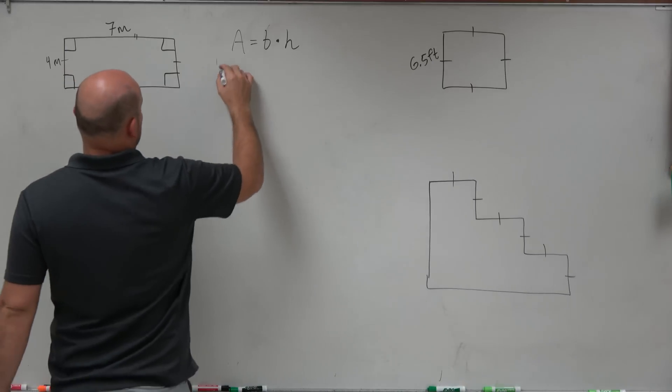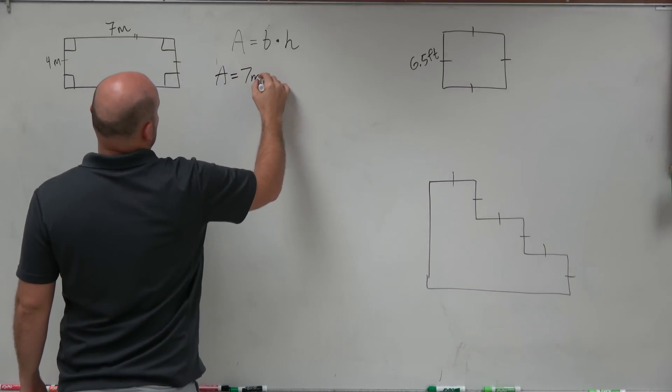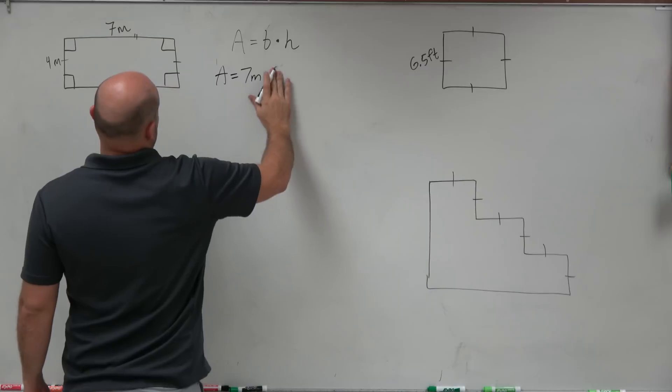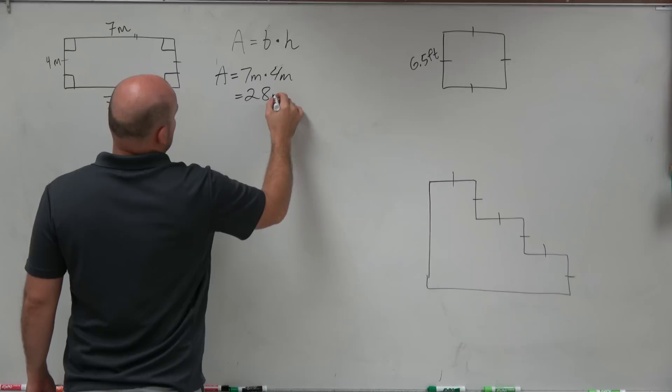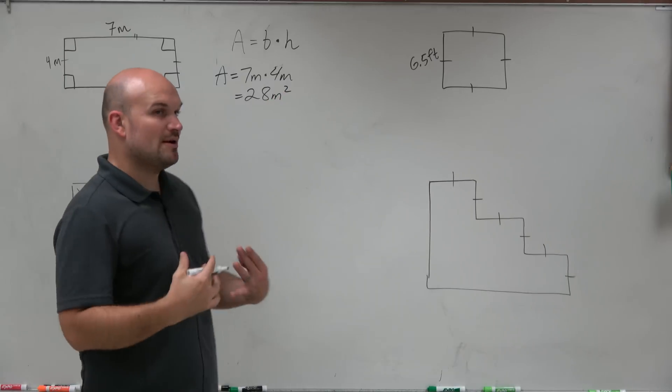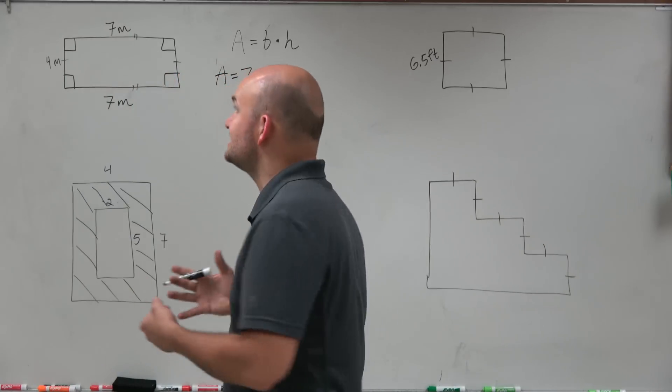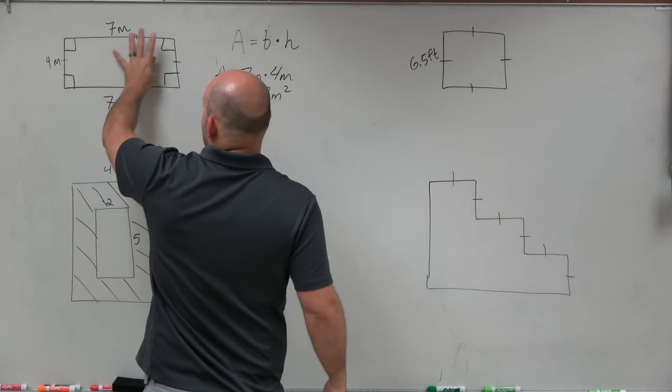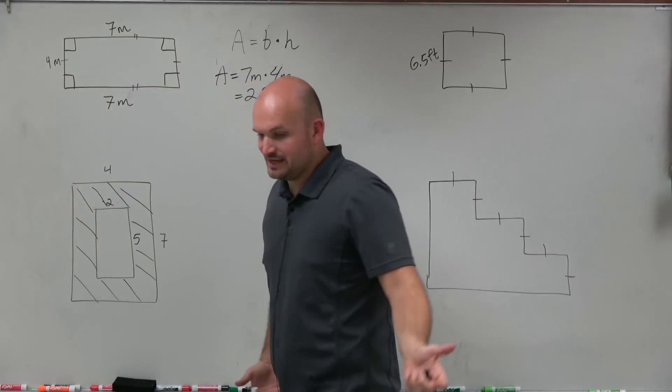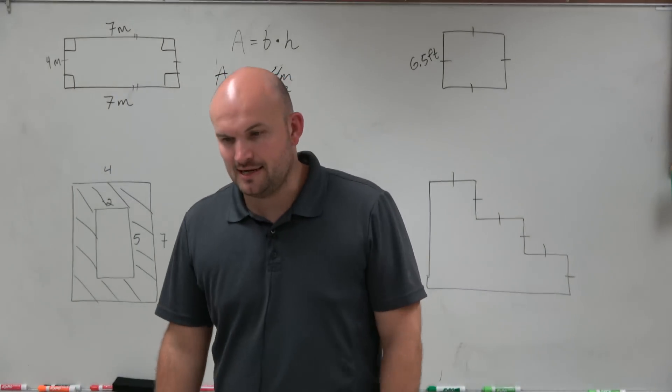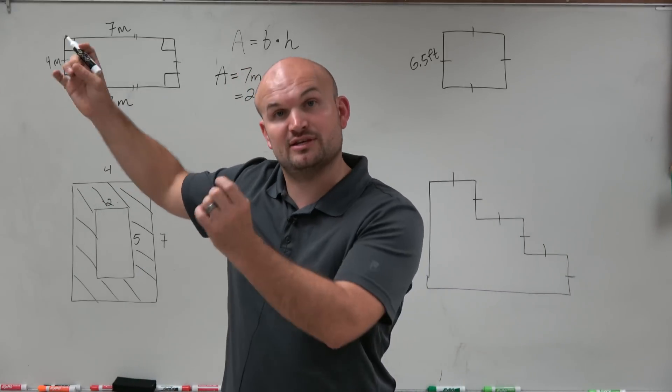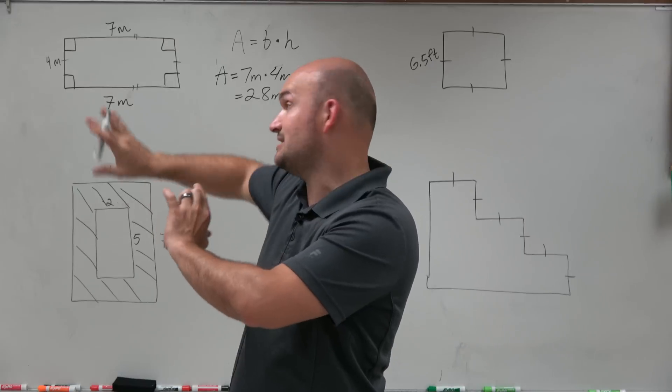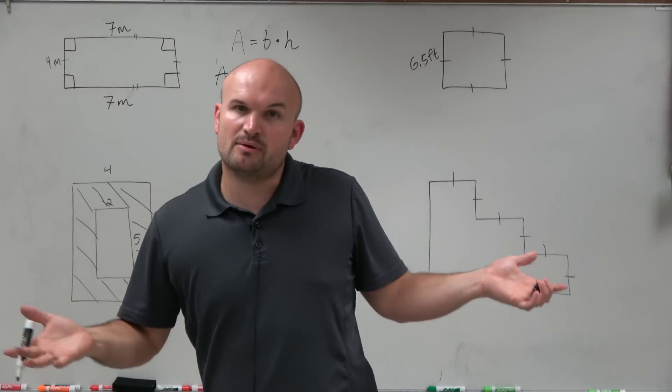To find my area, all I'm simply going to do is 7 meters times 4 meters, and that's going to equal 28 meters squared. Remember, area represents basically the space inside, the space that that rectangle takes up. One way to think about that is like wrapping paper. What would it take to cover that up with a sheet of paper? How much paper would it take to cover that up? And that's going to be represented in the area.